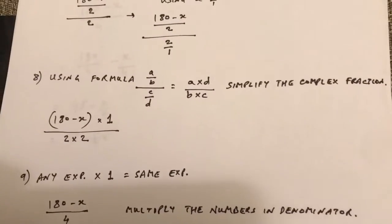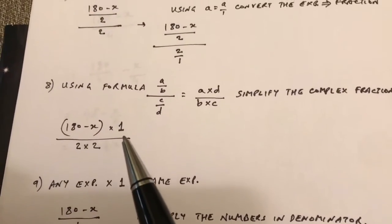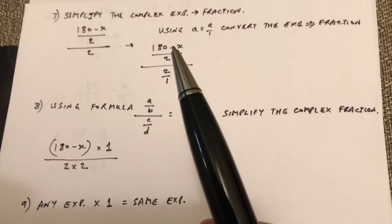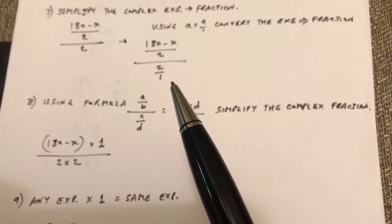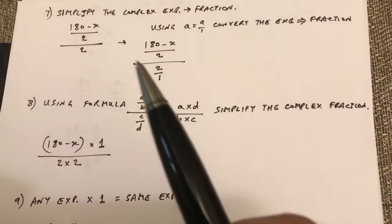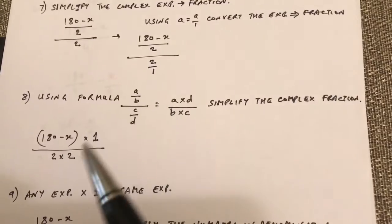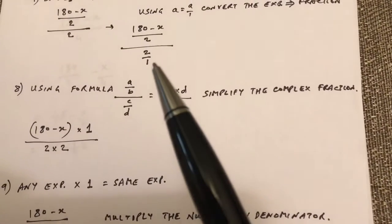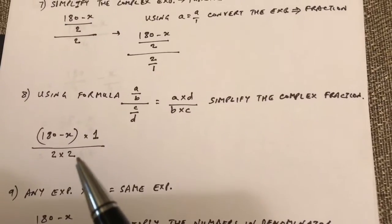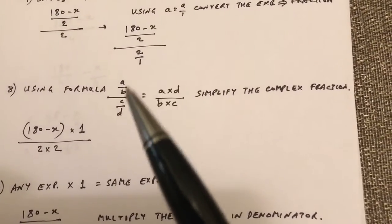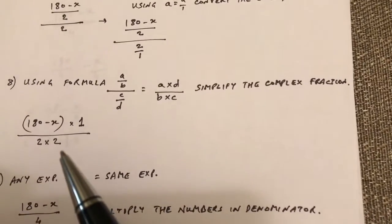So over here, we have 180 minus x times 1 over 2 times 2. So since this is our A, B, C, and D, 180 minus x is our A. So times 1 because 1 is our D, over 2 times 2 because it's B times C. So our B is 2 and our C is 2. So 2 times 2.